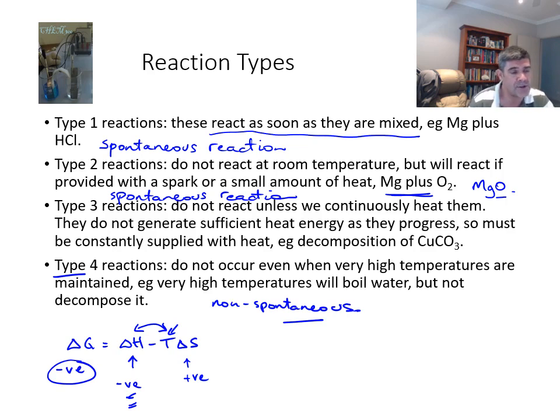Then the type 3 reactions, which we skipped over. These do not react unless we continuously heat them. They don't generate sufficient energy as they progress, so they must be constantly supplied with heat. So here we have copper carbonate, for example, which would be a solid which, when we add heat to it, would decompose into copper oxide, which is also a solid, and carbon dioxide, which is a gas. The fact that this is going to produce a gas is going to increase the degree of disorder. So we do have some disorder happening here.